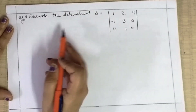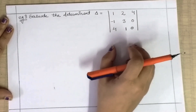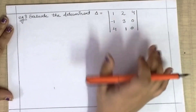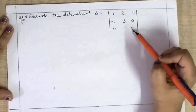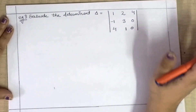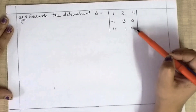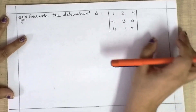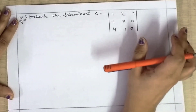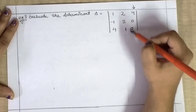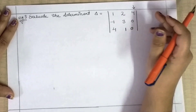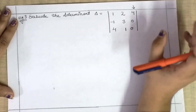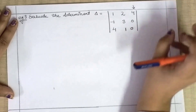Now let's see Example 3: evaluate the determinant. This is a 3×3 order determinant. The best way — when you have maximum zeros in a row or column — is to pick that row or column, because your answer will come quickly. Here there are maximum zeros, so if you pick that row or column, the calculation is fast. In the NCERT book this is solved along a specific column, but I will show you both a row and column approach so you can see the answer is exactly the same.